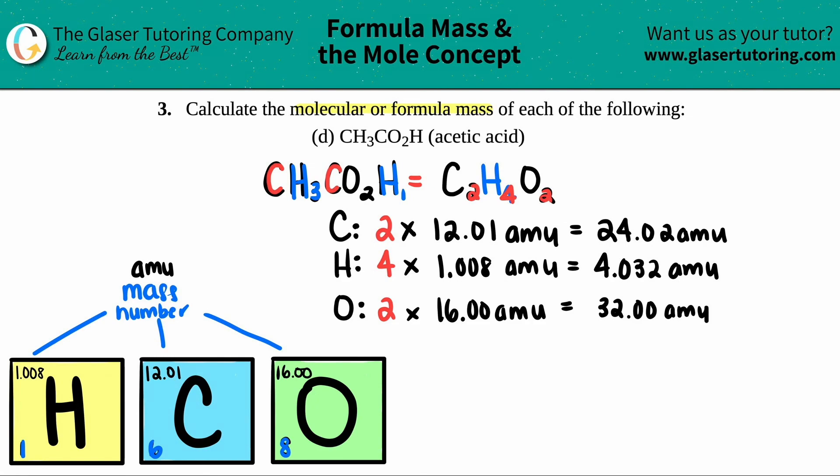Now if we want to find out the total mass of acetic acid, we got to add them up. It's as easy as that. So 24.02 plus 4.032 plus 32, and I get 60.052.